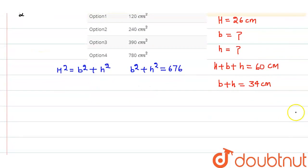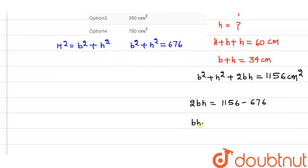Now, what you do is just square this thing. So you get b squared plus h squared plus 2bh equals the square of 34, that is 1156 cm squared. Substitute the value of b squared plus h squared. So you get 2bh equals 1156 minus 676. So that is bh equals 480 by 2, that is 240 cm squared.